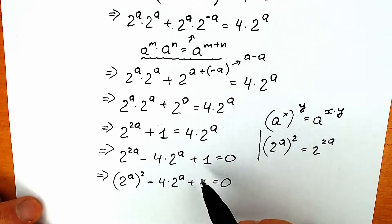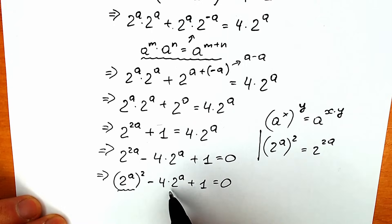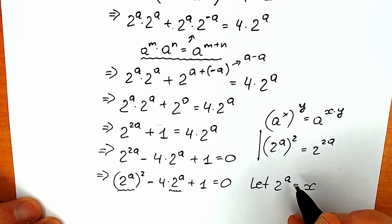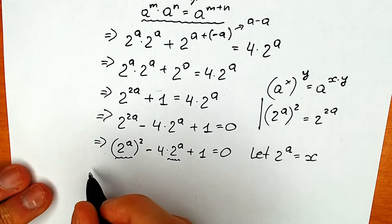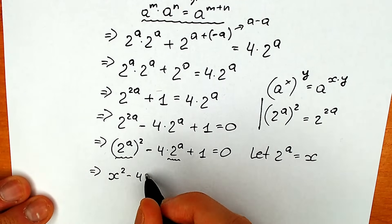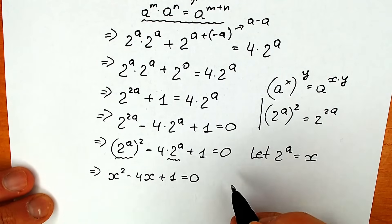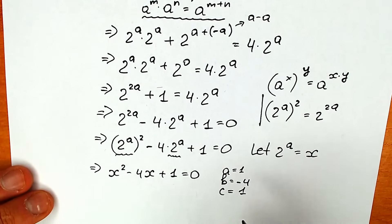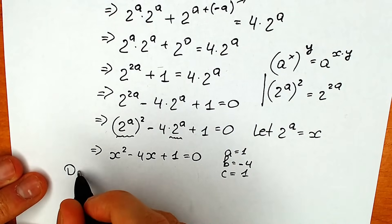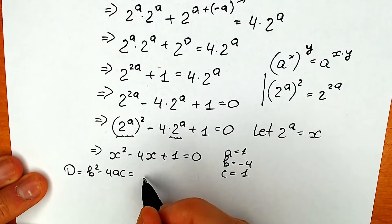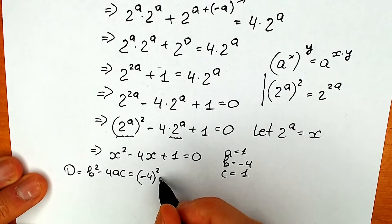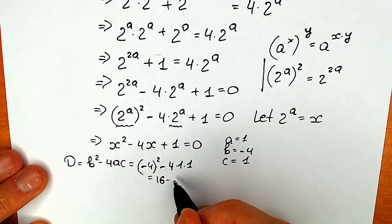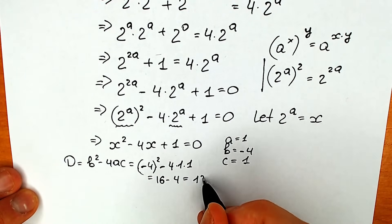Now let's make the substitution: let x = 2^a. The equation becomes x squared minus 4x plus 1 equals 0. Our coefficients are a = 1, b = -4, and c = 1. Let's find the discriminant: D = b² - 4ac = (-4)² - 4(1)(1) = 16 - 4 = 12.